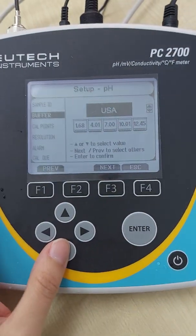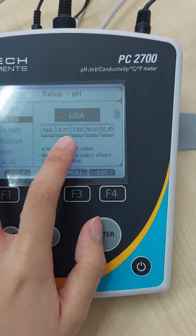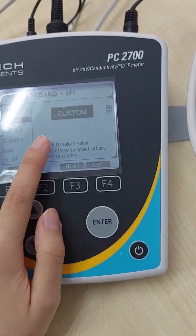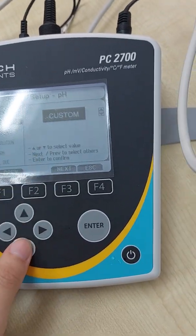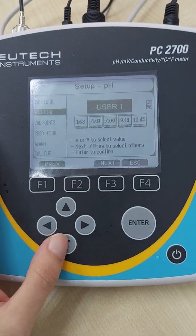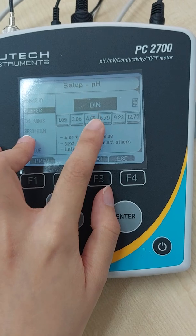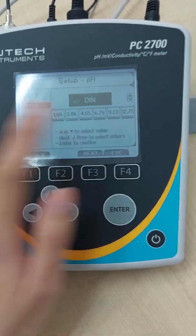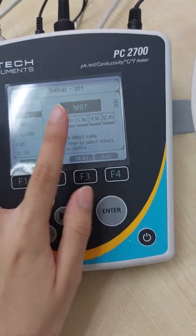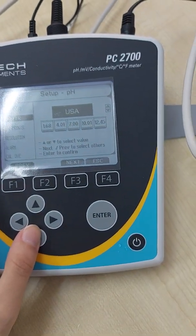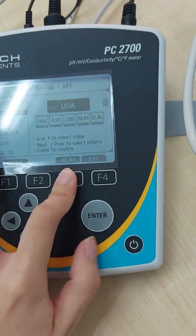So buffer group, there are a few types of buffer group. The standard one will be the USA, the most common one. You can also customize your own buffer group depending on user. You can save up to two user, and then we have the DIN standard. You see the number is a bit different, and also NIST standard. So we'll go back to USA.